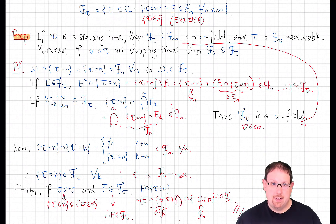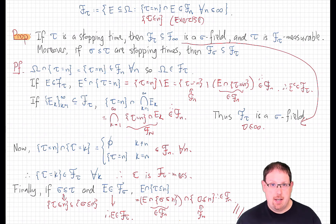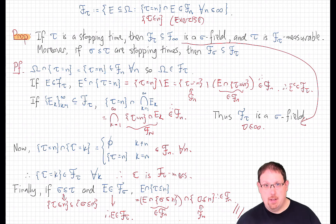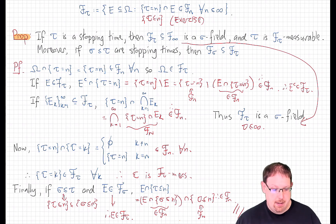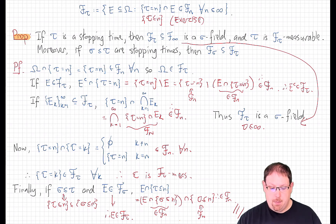So this F_tau, which to belabor the point is a deterministic sigma field, does at least have the nice property that the stopping time tau itself is F_tau measurable. Now remember, our hope was that this would be a sigma field with respect to which the stopped process x_tau is going to be measurable if x_n is any adapted process. So we're going to prove that now, and actually more generally, we're going to characterize exactly what it means for any random variable to be F_tau measurable.